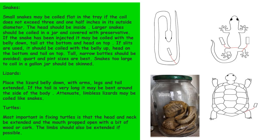For labeling specimens: small snakes must be coiled and flattened in the tray. If the coil is not injected, the edge should be on the inside. The head of the snake should be on the inside of the coil. Larger snakes are preserved in jars or flasks. The tag is mentioned in the ventral region.